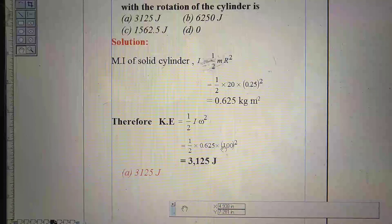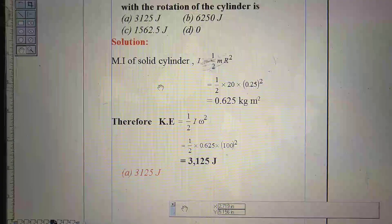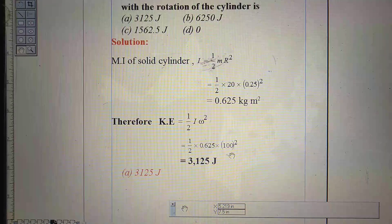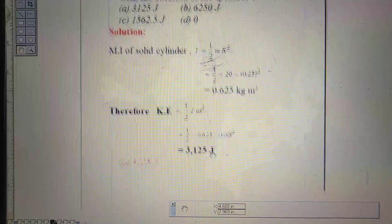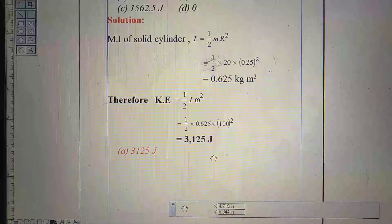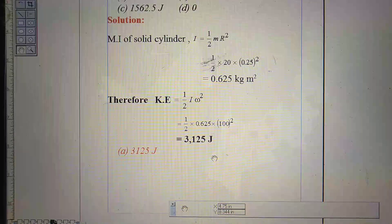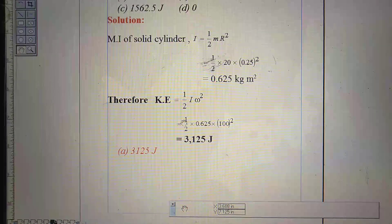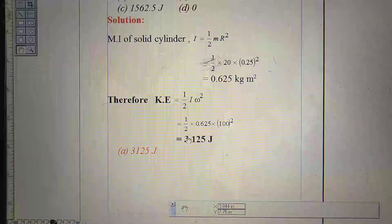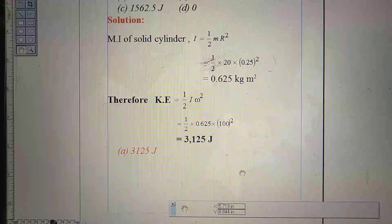What is the formula of rotational kinetic energy? That is half I omega square. Insert the value of I and omega given in the question. After calculation, we find out 3,125 joule. So, right option is A, that is 3,125 joule.